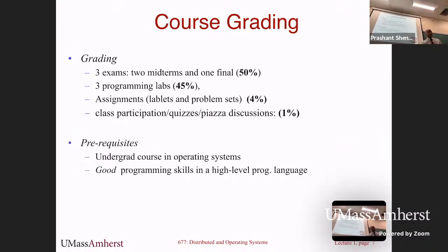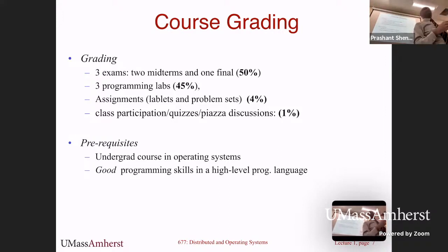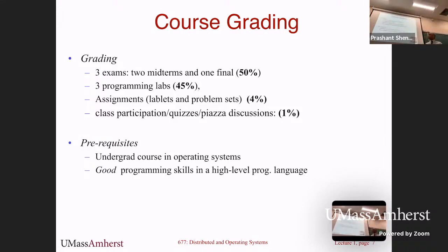As far as course grading is concerned, there are three exams and three labs — that's going to be most of your grade. Two midterms and a final make up 50% of the grade; three programming labs are 45%. There are some small assignments worth 4% — a combination of lablets, which are tutorials where you learn about a topic you'll use to program a lab, plus small homeworks and problems. And 1% for class participation.